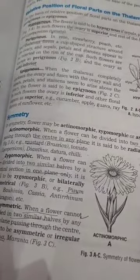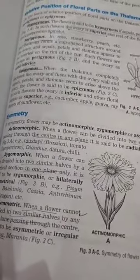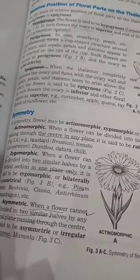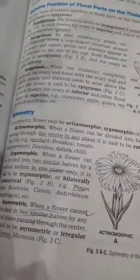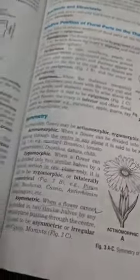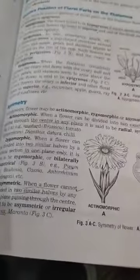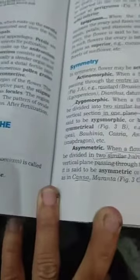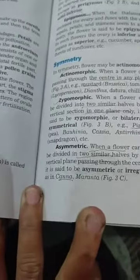In the epigynous condition, the ovary is completely inferior. Next is symmetry. If we look at symmetry, there are three types in flowers: actinomorphic, zygomorphic, and asymmetric.